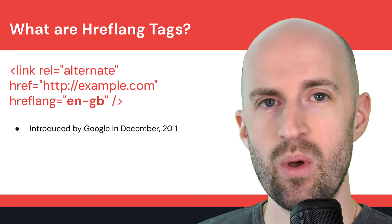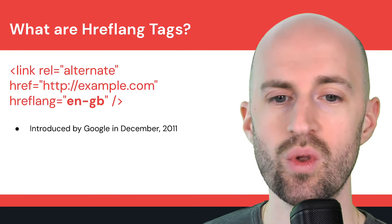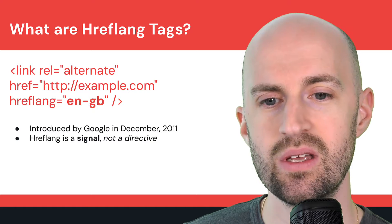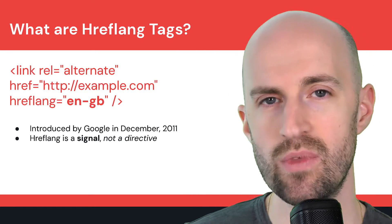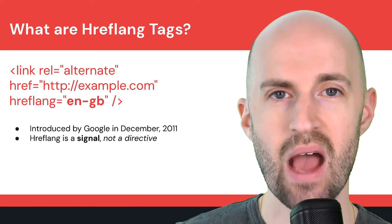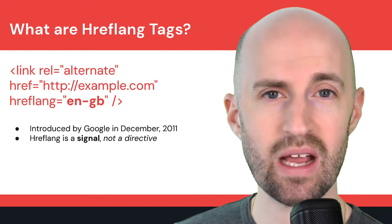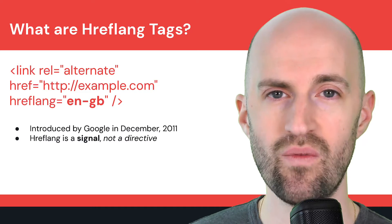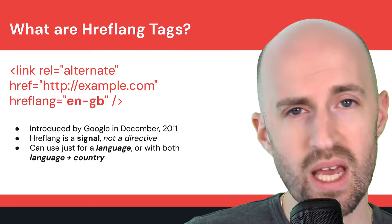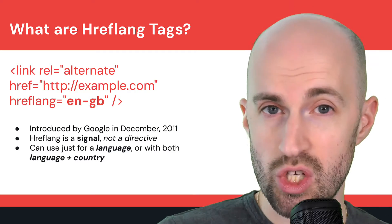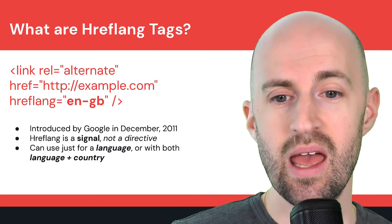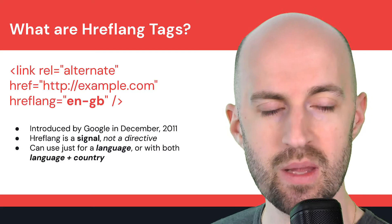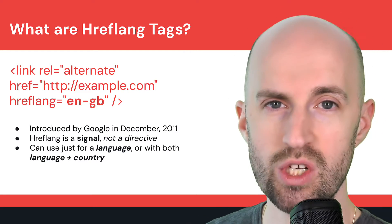This attribute was introduced by Google in December 2011, so quite a while ago — over a decade. The hreflang tag is a signal to search engines that recommends how to interpret the content on that page. It's not a directive, so search engines can decide whether or not to follow it. You can use hreflang tags for just a language, just a region, or both a country and language — three different types depending on your brand's preferences and how you wish to target.